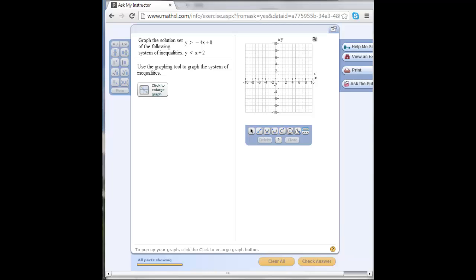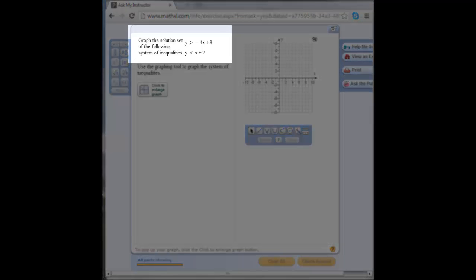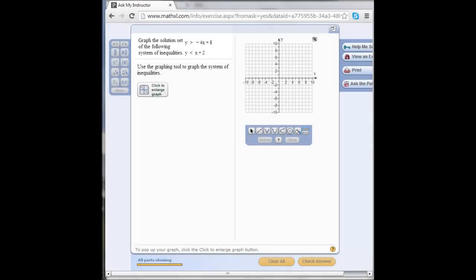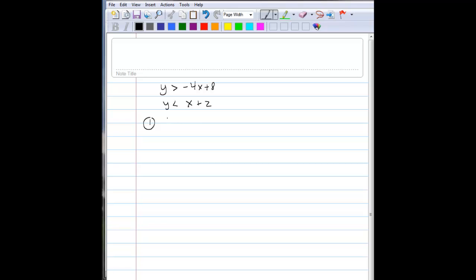This is graphing a set of inequalities. So here's our problem. I have to graph the solution set, that is all the things that make the following equations true. Y is greater than negative 4x plus 8, and y is less than x plus 2. When I graph inequalities, I'm first always going to graph the equality. That is, I'm going to change the less than or greater than sign into equal sign.